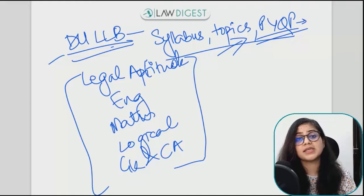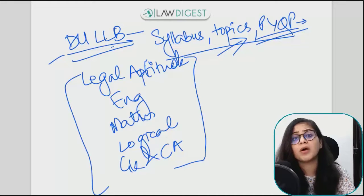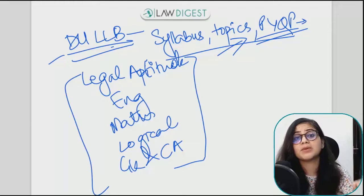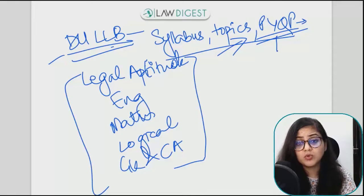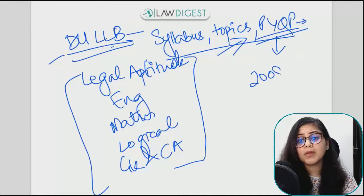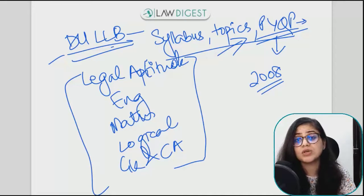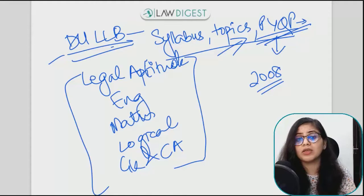Past year papers are very important to go through, because they will give you a clear idea of the format, the pattern, and the kind of questions that come up. You will be able to gauge the difficulty level. Past year papers are available online — you can Google them. We are also providing papers from 2008 up till now on our website, www.lawdigest.in. The link is given in the description of this video, and I have done a proper analysis of these papers in my YouTube videos as well.